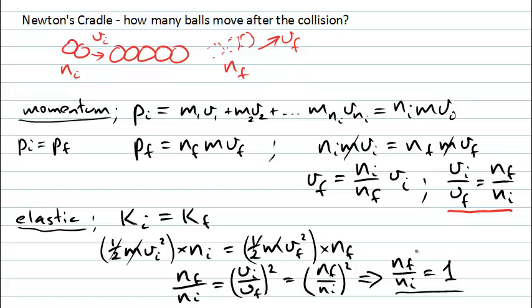The number of objects that are leaving the collision, moving afterwards, must equal the number of objects that were moving in before the collision. So importantly you can see both of these conditions, momentum conservation and kinetic energy conservation, that is elastic collisions, are important to tell us how many objects are moving after the collision.